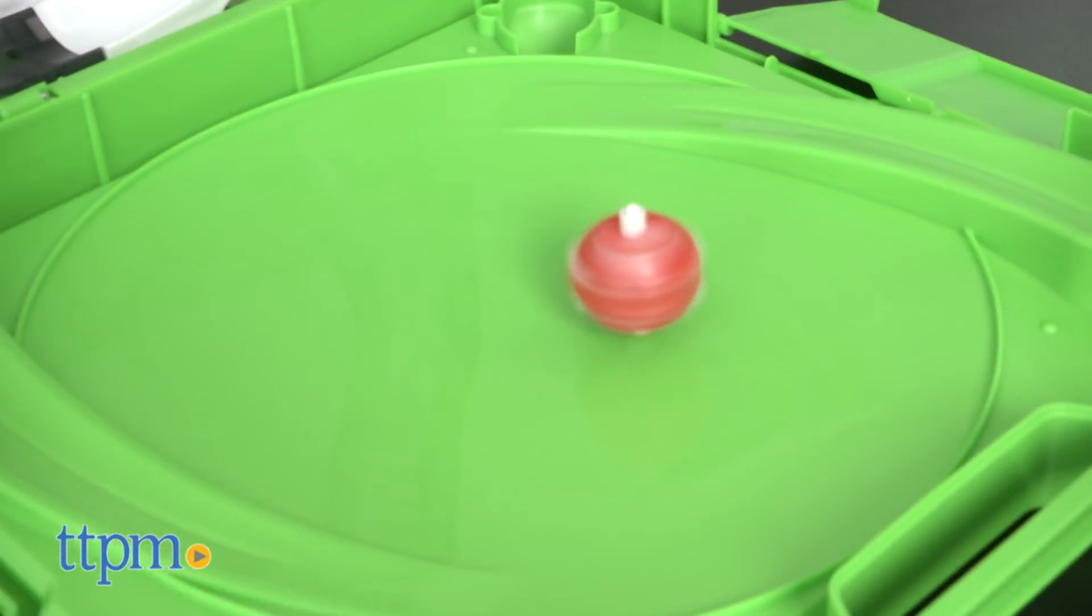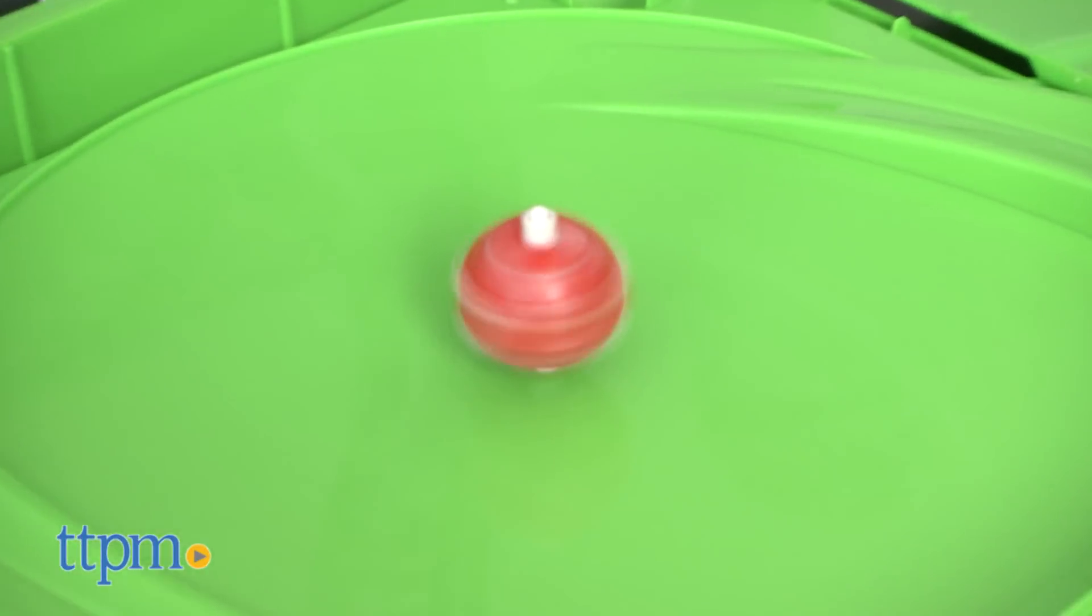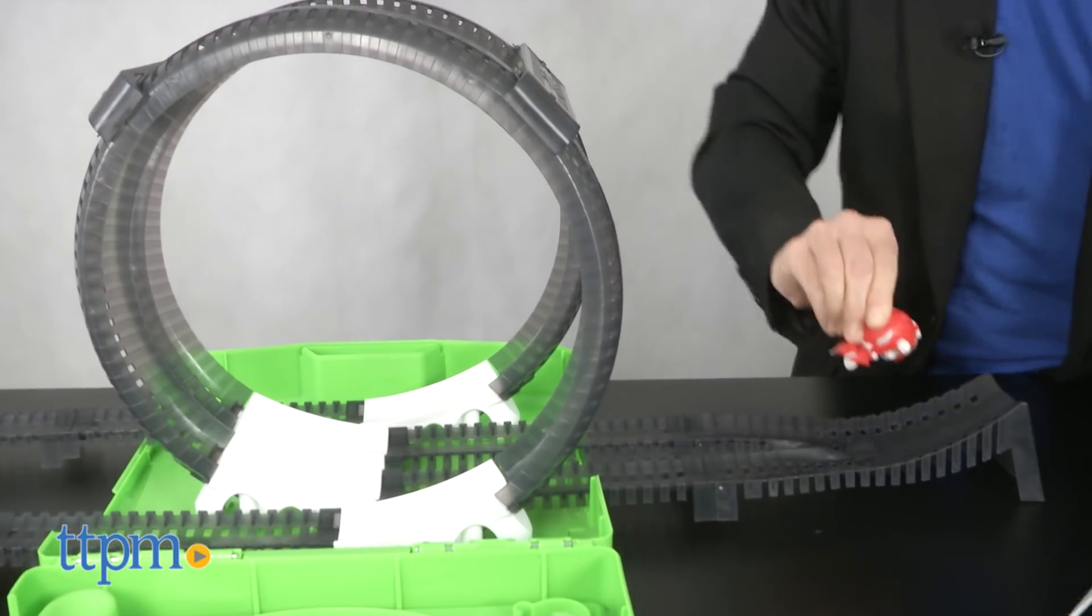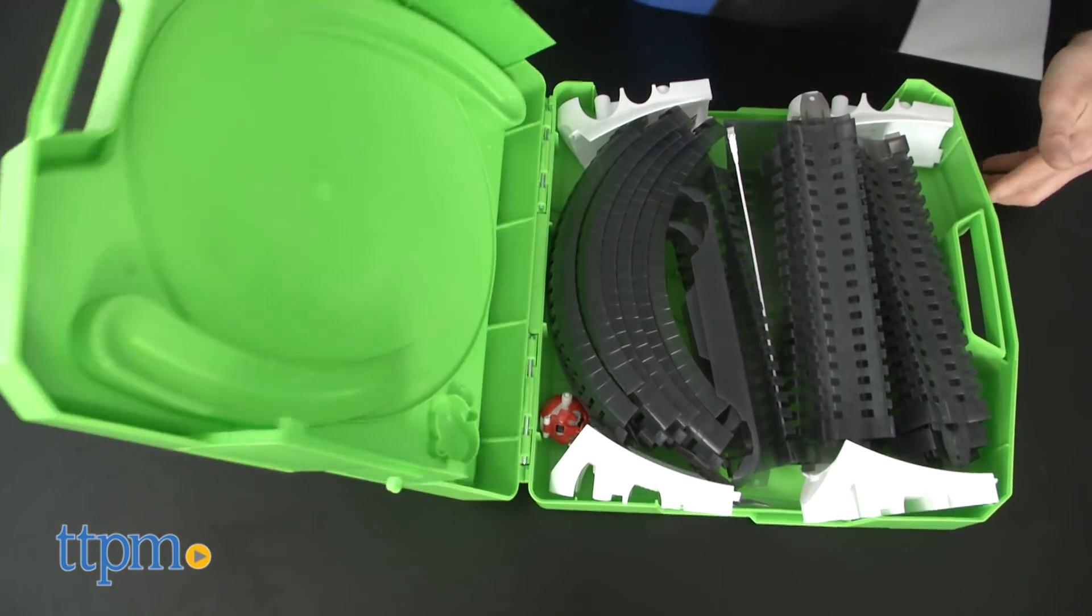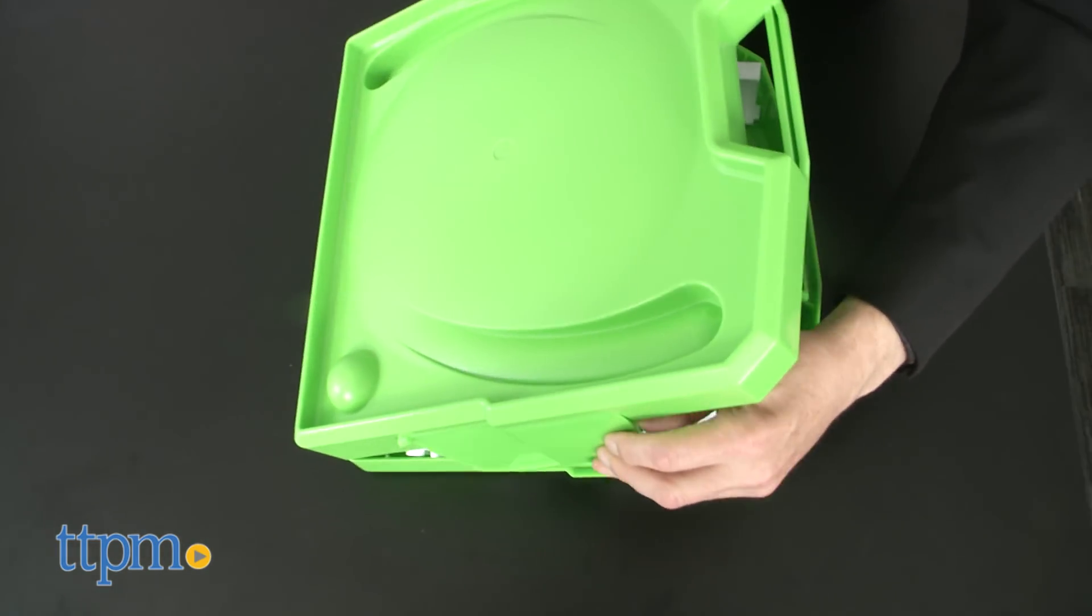This set has two different ways to compete with the Power Rippers closed like battling tops or open like race cars. This set comes with one Power Ripper, track and connectors and a carrying case that everything fits inside.